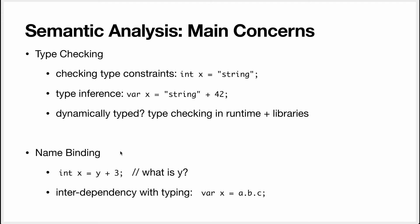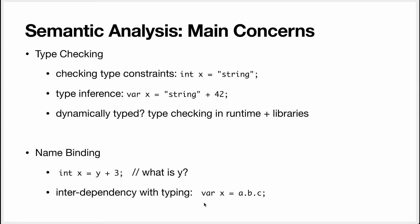The other big concern of semantic analysis is name binding. Name binding basically means you want to find where a name was defined. So if I have 'index = y + 3,' I want to know where y was defined. There is an interdependency with typing — to verify that this is indeed an integer, I need to know what y is. It gets even more involved when you deal with structures or classes: to know the type of 'a.b.c,' I need to know the type of c, which depends on b, which depends on a. Type checking and name binding are completely intercorrelated.